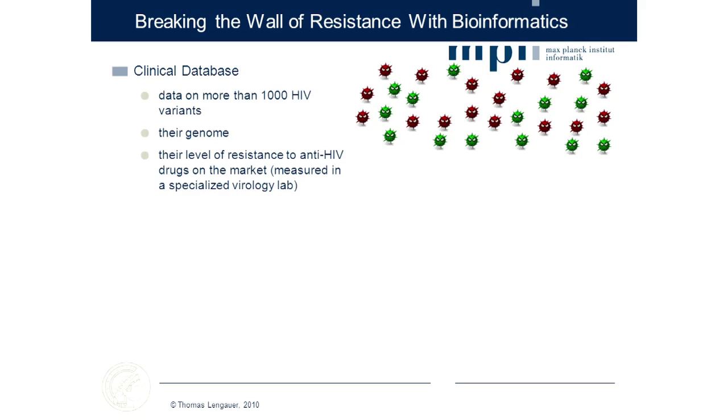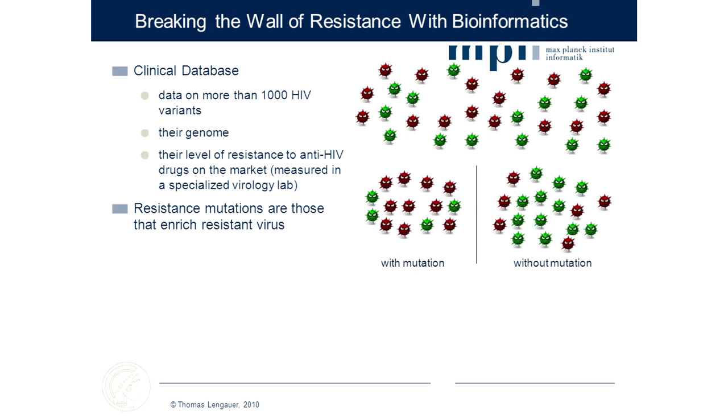For this database we now want to learn, with mathematical methods, what the resistance level of a new viral variant would be against a drug — one of the millions of variants out there in patients but not among the thousand in our database. This is where the mathematics come in. I want to give you a small insight into how you can learn from such data — a very banal idea.